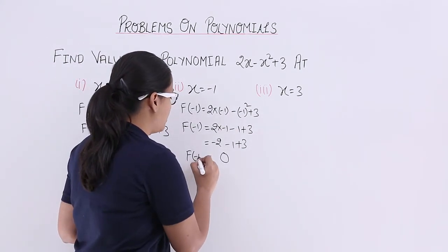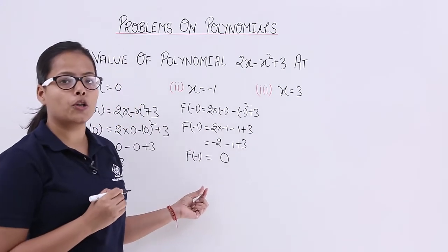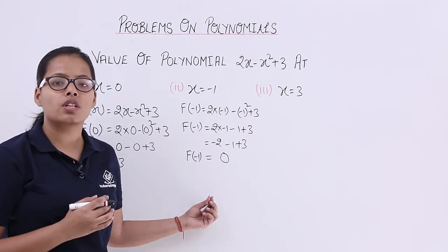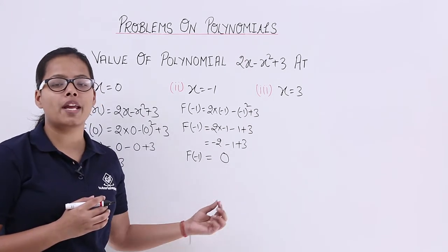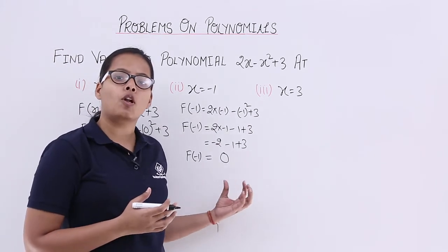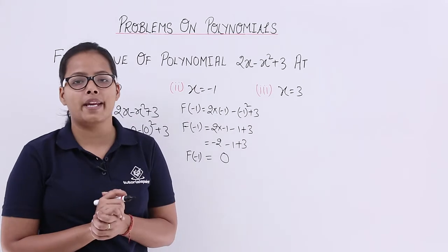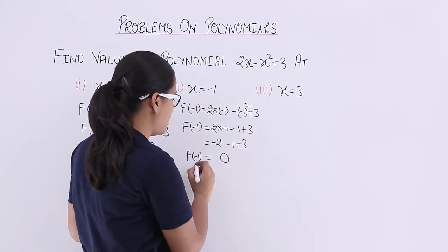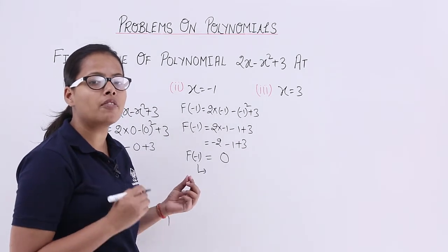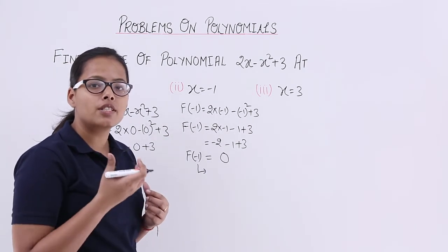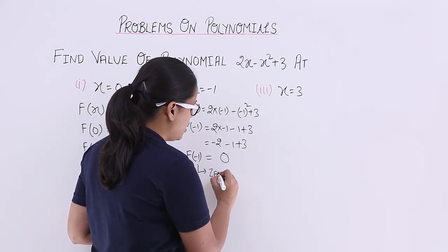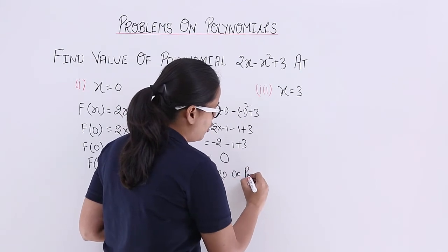You can see that the value of this polynomial is becoming 0 at x = -1. So x = -1 is the zero of this polynomial, because the value of this polynomial becomes 0 at x = -1. Keep in mind: if the value of a polynomial becomes 0, then that value of x will be the zero of that polynomial. So x = -1 is a zero of the polynomial.